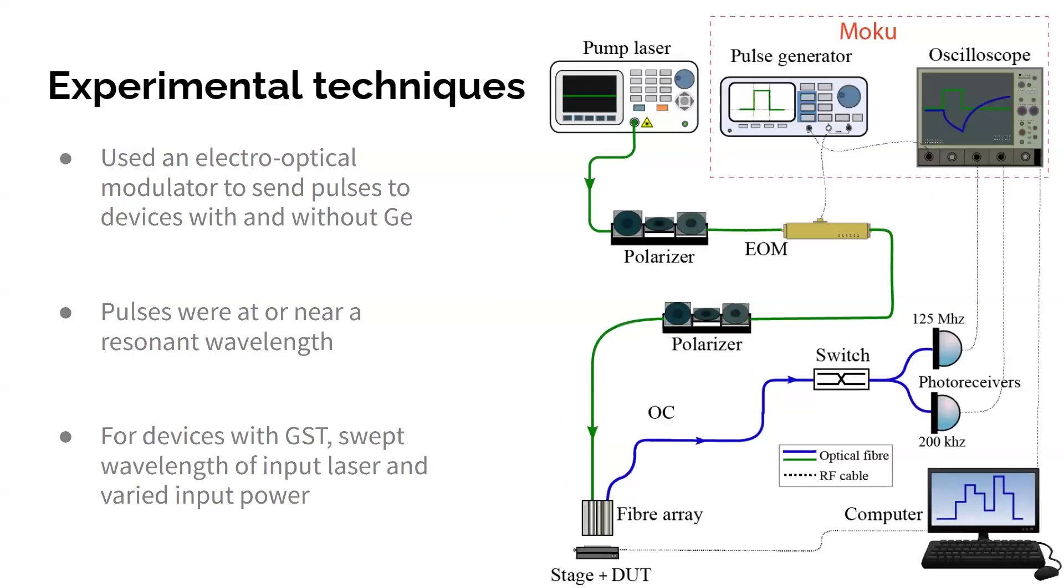All right, so I also looked at these systems experimentally. So this is my experimental setup. I'd be happy to discuss it in more detail. I don't have a lot of time, so please come by my poster. But basically we used an electro-optical modulator to send pulses to our devices with germanium, and we compared what we got back. For our devices with GST, we just swept the wavelength of our input laser. So we're looking at those spectra that I showed you before, and varied the input power.